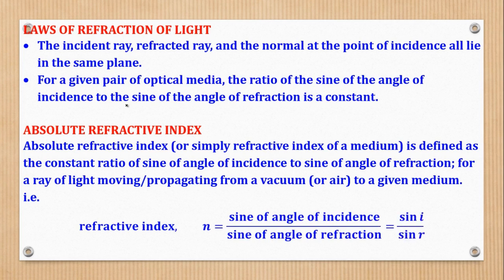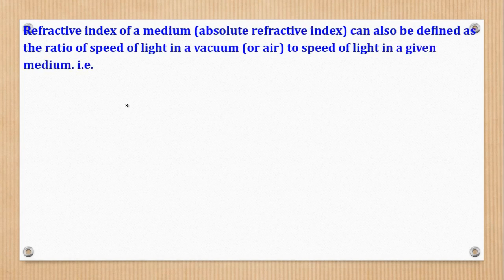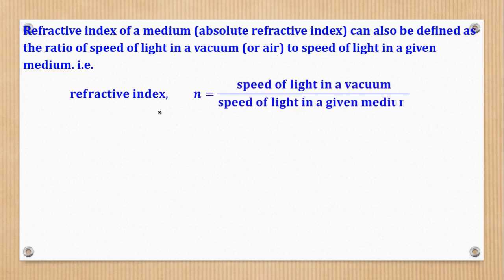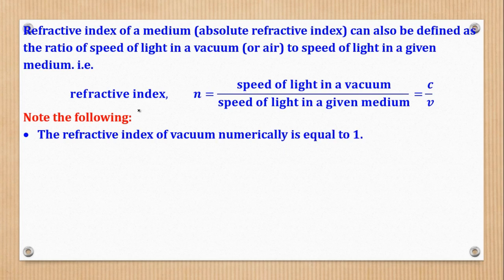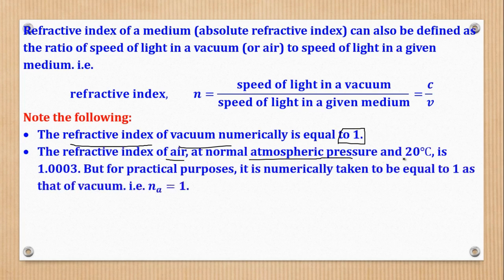The formula for absolute refractive index can also be defined as the ratio of speed of light in vacuum to speed of light in a given medium. There are things to note: the refractive index of vacuum is numerically equal to 1. The refractive index of air at normal approximate atmospheric pressure and 20 degrees Celsius is 1.0003, but for practical purposes it is taken to be 1. In calculations we shall use 1. The speed of light in vacuum is 3 × 10⁸ metres per second, which will be the value of c.